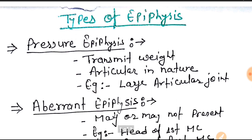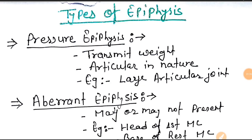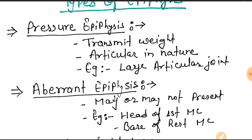I am telling about the epiphysis types which are most commonly asked in NEET PG. First of all, let's start with the pressure epiphysis. Pressure epiphysis is the main epiphysis which transmits our body weight and is at the lowest position. Most of our body weight is transmitted to the ankle joint. Pressure is mainly for weight and is present where articular joints are present — large articular joints such as the radio-ulnar humeral joint (elbow joint), shoulder joint, pelvic joint, and knee joint. These are the weight-bearing joints.